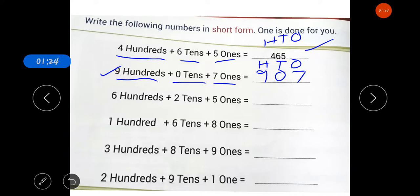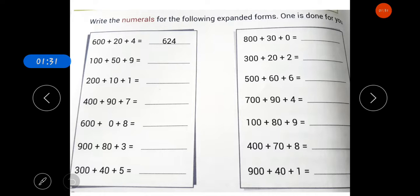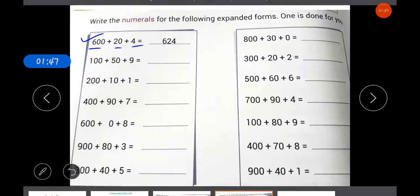The short form of this question is 907. So you have to complete these questions in this way. Now, the next worksheet is about: write the numerals for the following expanded form. One is done for you.